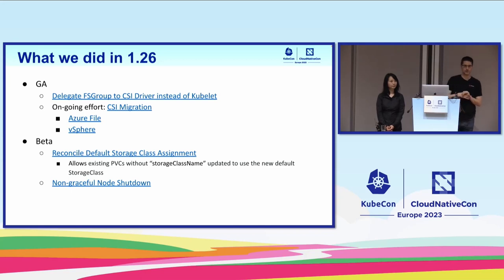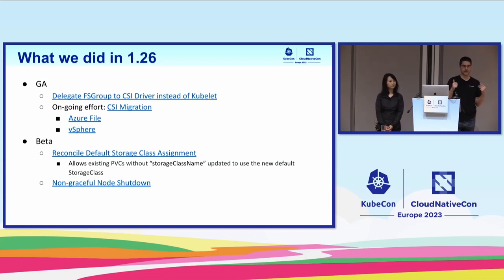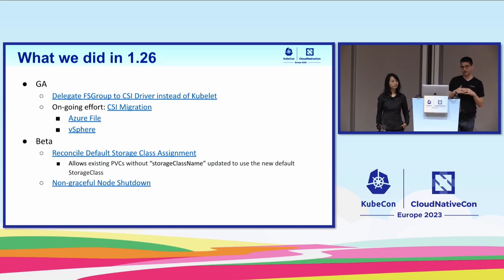In 1.26, we are also continuing CSI migration, and we have Azure File and vSphere CSI migration graduating. That means users can still use the old Azure File and vSphere storage classes and persistent volumes without changing anything. However, when they upgrade to 1.26, all the storage work will be done by the CSI driver and not by Kubelet. From a user perspective, nothing changes. From an admin perspective, they need to install the driver, but it should be seamless for users.